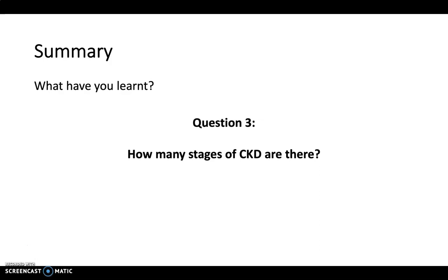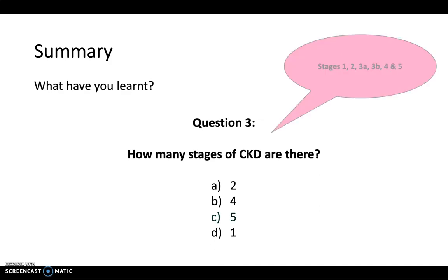And finally, how many stages of CKD are there: two, four, five, or one? The answer is five — you've got stages one, two, three A, three B, four, and five. That concludes this pathophysiology video on CKD. Thanks very much for checking it out and I hope it was helpful. Take care now.